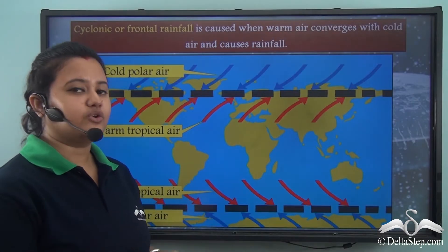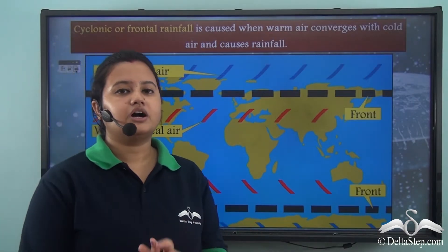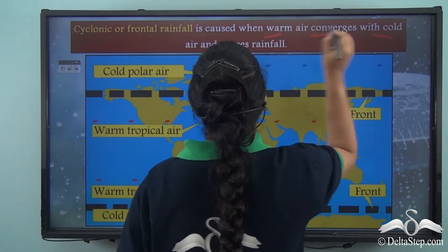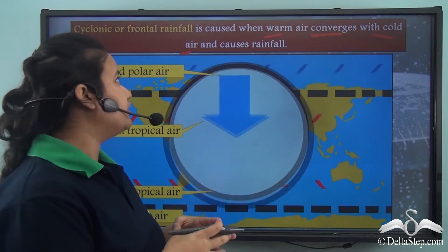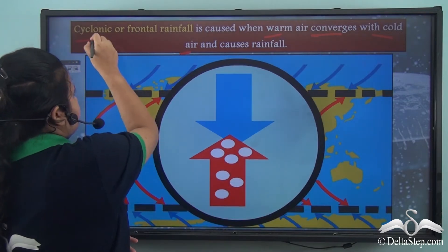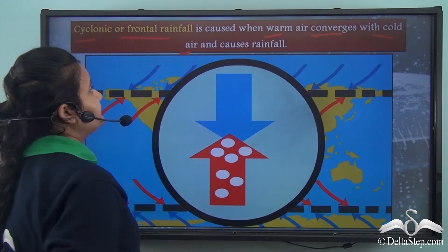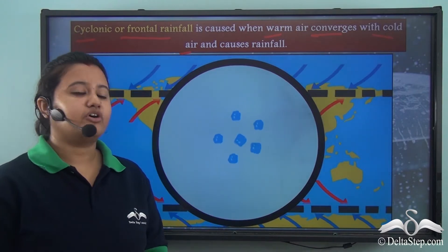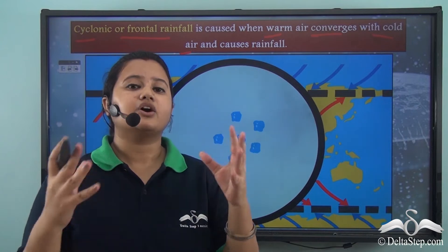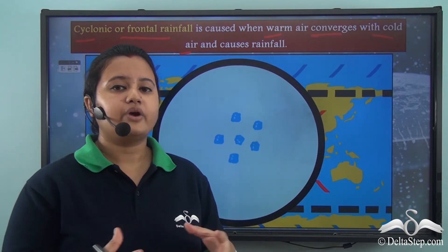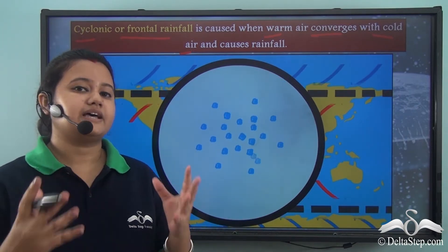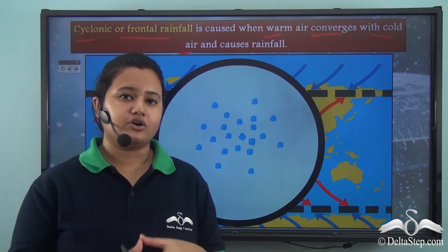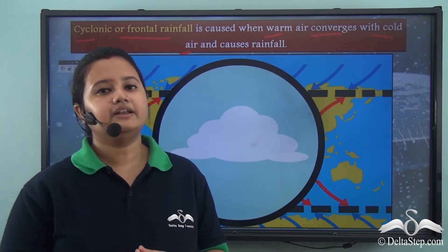This type of rainfall is known as cyclonic or frontal rainfall. It is called frontal rainfall because it occurs at the front — the contact zone of two air masses. It is also called cyclonic rainfall because the winds that cause this rainfall are cyclonic in nature.